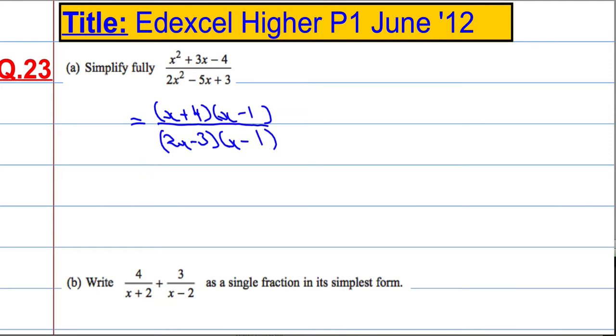Okay, and now, now that we've written it as a product, we can cancel above and below. So I can cancel. x minus 1 is common to both, which means that the final answer is going to be x plus 4 over 2x minus 3.